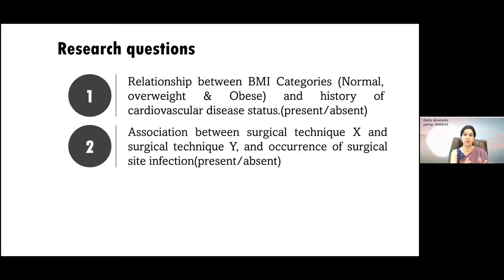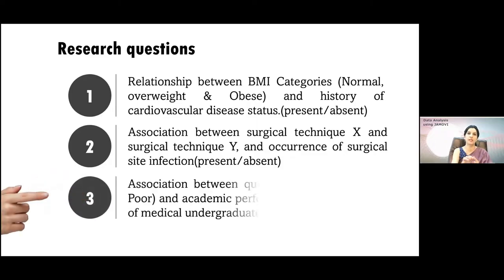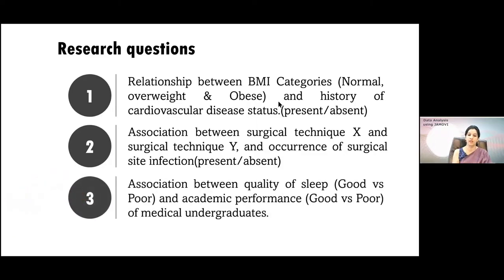You can also test the association between surgical technique X and surgical technique Y and the occurrence of surgical site infection — whether it is present or absent with a particular technique. Here also you will see there are two variables: one categorical variable BMI with three categories — normal, overweight, and obese — and another categorical variable with two categories, making a three-by-two contingency table. Similarly, for the surgical technique question, it has two categories and presence or absence of surgical site infection also has two categories — so it will be a two-by-two contingency table.